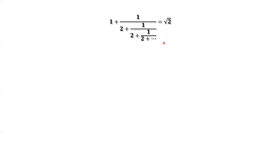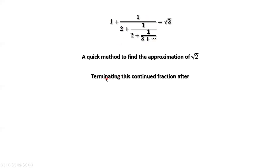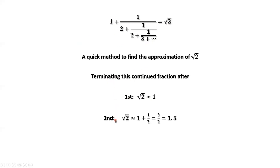We are going to use this result to introduce a quick method to find an approximation of square root of 2 without using a calculator — just use this expression. If we terminate the continued fraction after the first term, we stop here, and square root of 2 is approximately equal to 1.